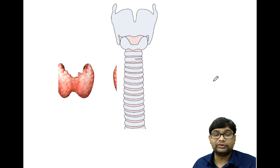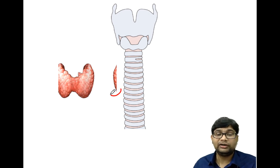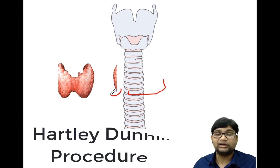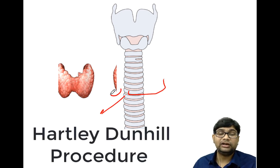If we do subtotal on one side and total on the other side, it is known as the Hartley-Dunhill procedure.